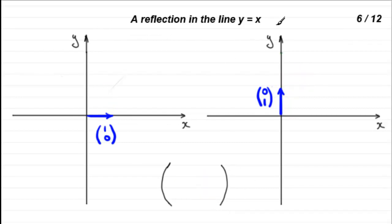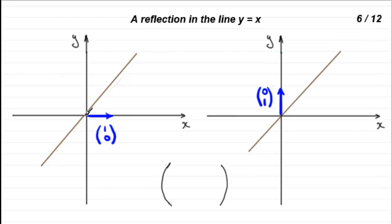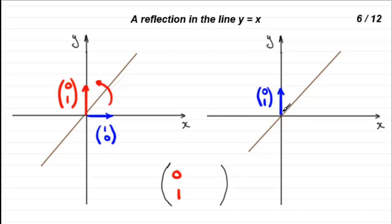For number 6, a reflection in the line y equals x — the diagonal line through the origin. The vector (1, 0) gets flipped over the line to the position (0, 1). The second unit base vector (0, 1) gets flipped over the line to (1, 0). So the matrix has columns (0, 1) and (1, 0).